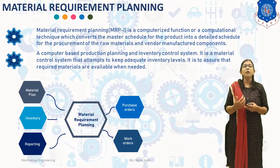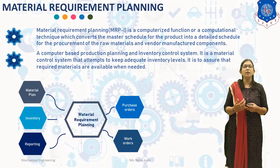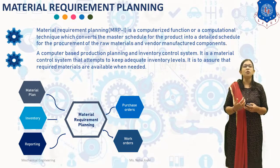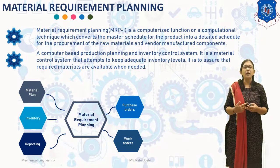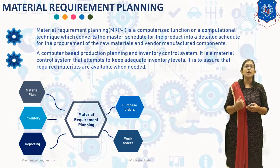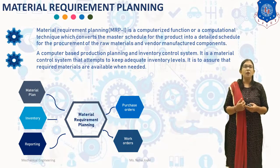It is also assured that required materials are available when needed. MRP-1 consists of three primary steps: taking inventory of the materials and components on hand, identifying which additional ones are needed, and then scheduling their production or purchase. Material Requirement Planning includes Material Plan, Inventory, Reporting, Purchase Orders, and Work Orders, as you can see in the diagram.